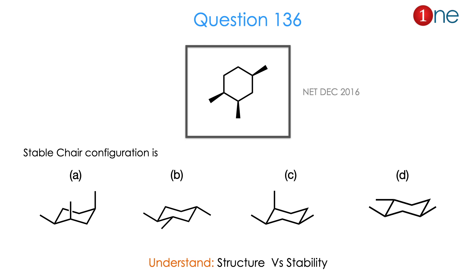Let us see the first question. Here you have cyclohexane with 3 methyl groups, all cis to each other. They have given the chair configuration of them, and we need to find which one fits the most stable configuration. All 4 structures differ in the axial or equatorial position. From the structure and possible answers, the question is really about structure versus stability. The answer is C.